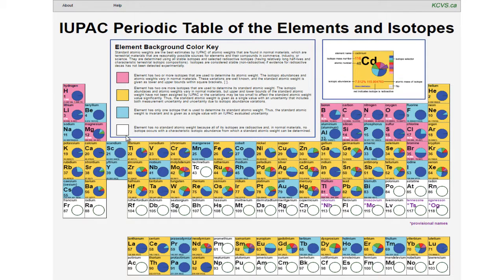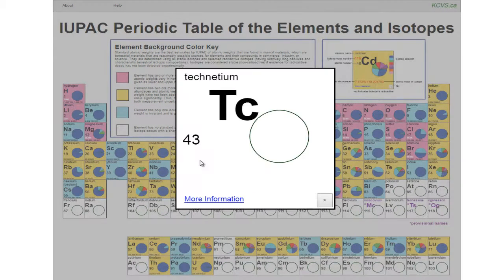White is the background color for an element if it has no standard atomic weight because all of its isotopes are radioactive and no isotope occurs in normal materials with a characteristic isotopic composition from which a standard atomic weight can be determined.